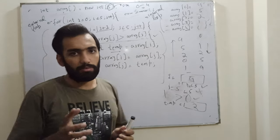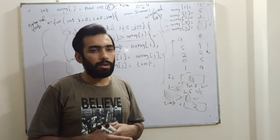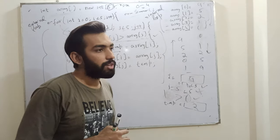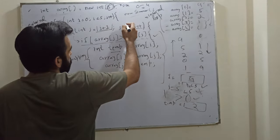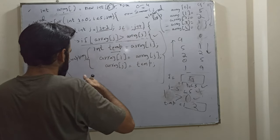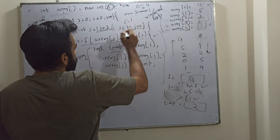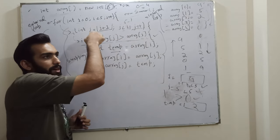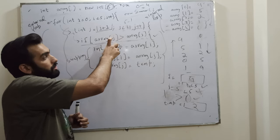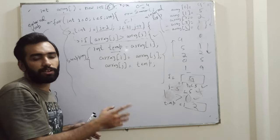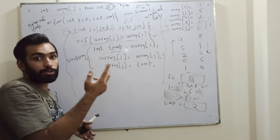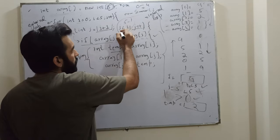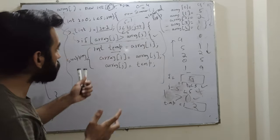One thing to note: our last iteration where i was 4 was essentially extra. We can optimize by changing the outer loop condition to size minus 1, which is 4. This way, when i is 4, j would be 5 which is already not less than 5, so it saves one unnecessary step.